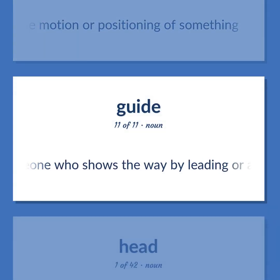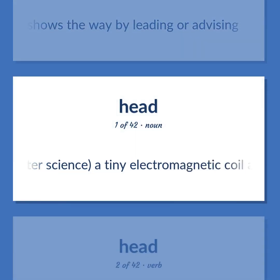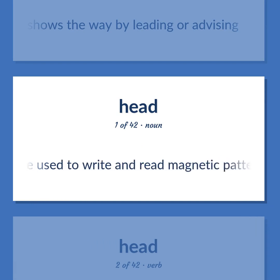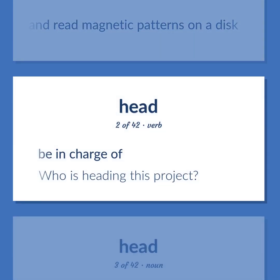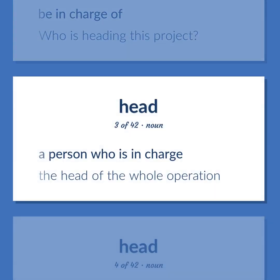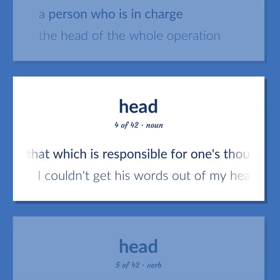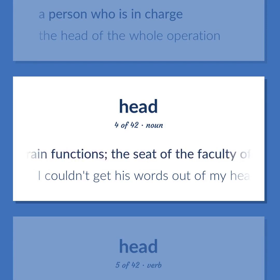Someone who shows the way by leading or advising. Computer science: a tiny electromagnetic coil and metal pole used to write and read magnetic patterns on a disk. Be in charge of. Who is heading this project? A person who is in charge. The head of the whole operation. That which is responsible for one's thoughts, feelings, and conscious brain functions. The seat of the faculty of reason. I couldn't get his words out of my head.